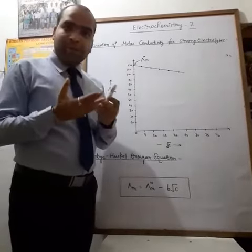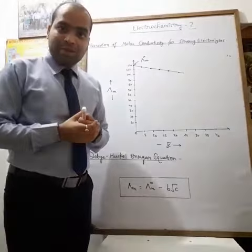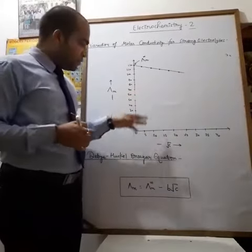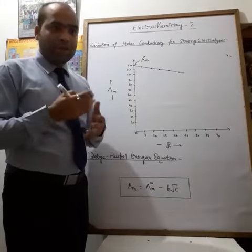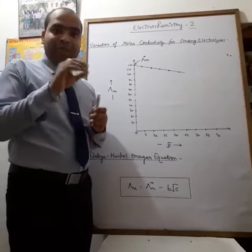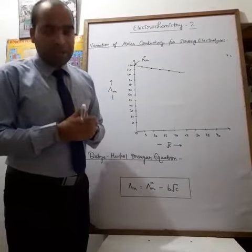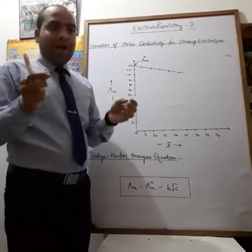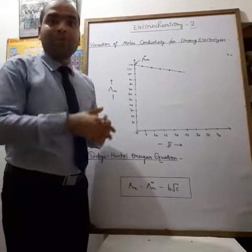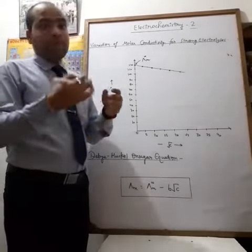strong electrolytic solution increases? The number of ions present per unit volume also increases, due to which greater interionic attraction occurs. This results in a decrease in the number of free ions in the solution which causes the flow of electric current. So as the concentration of solution increases, the number of free ions per